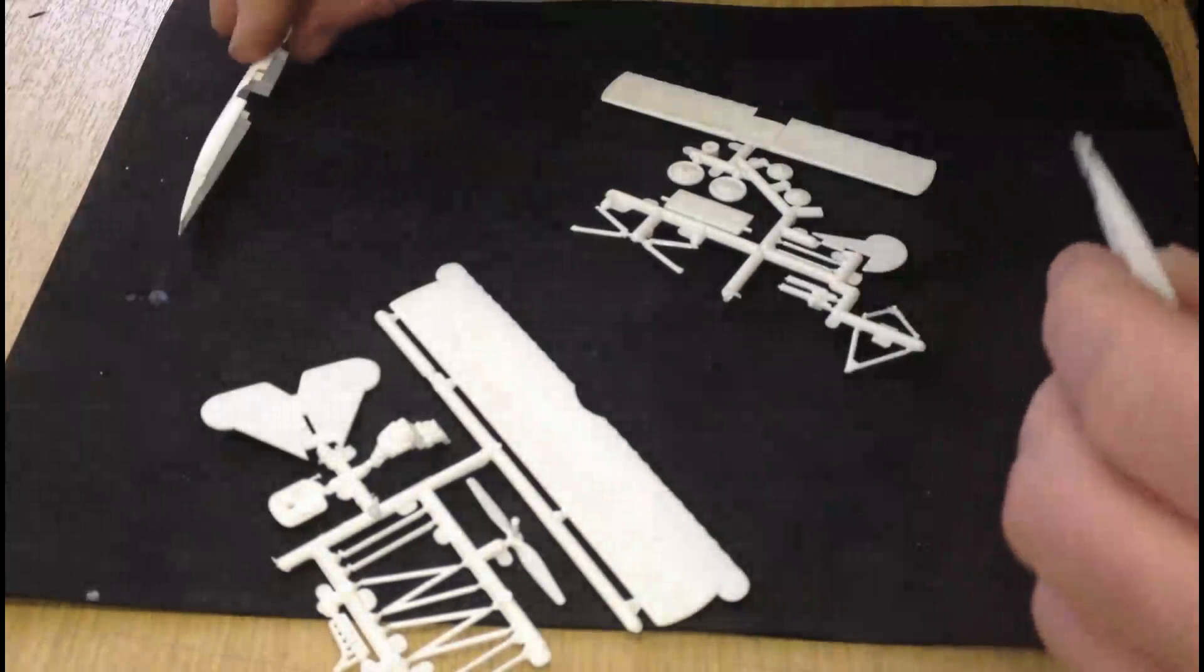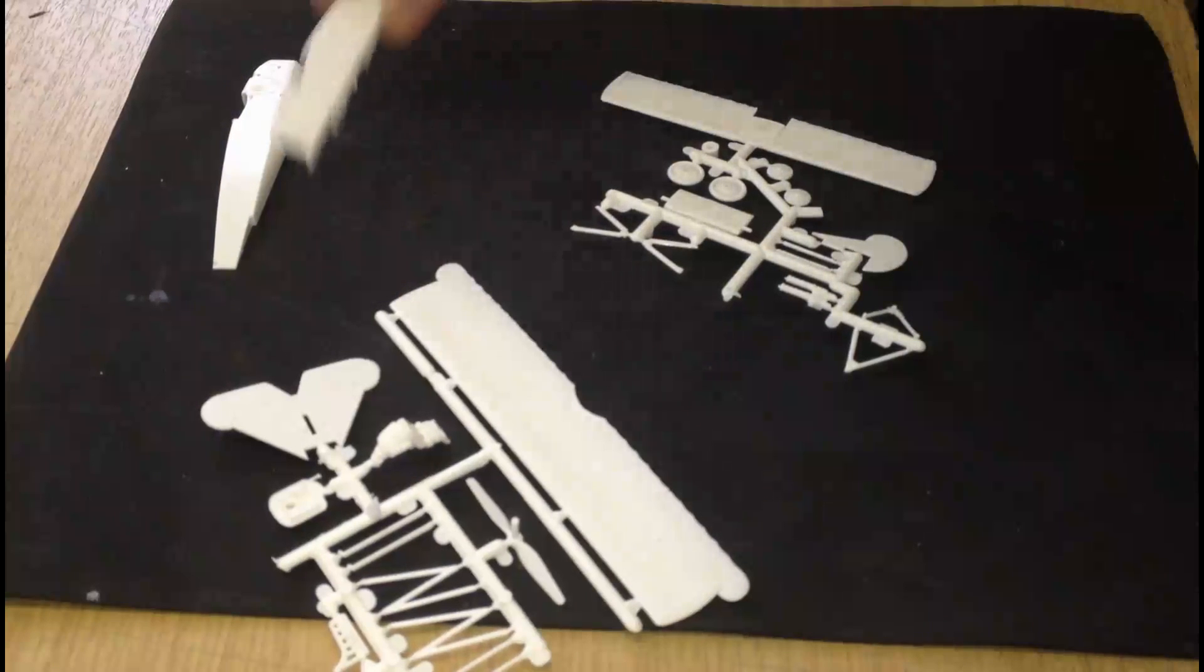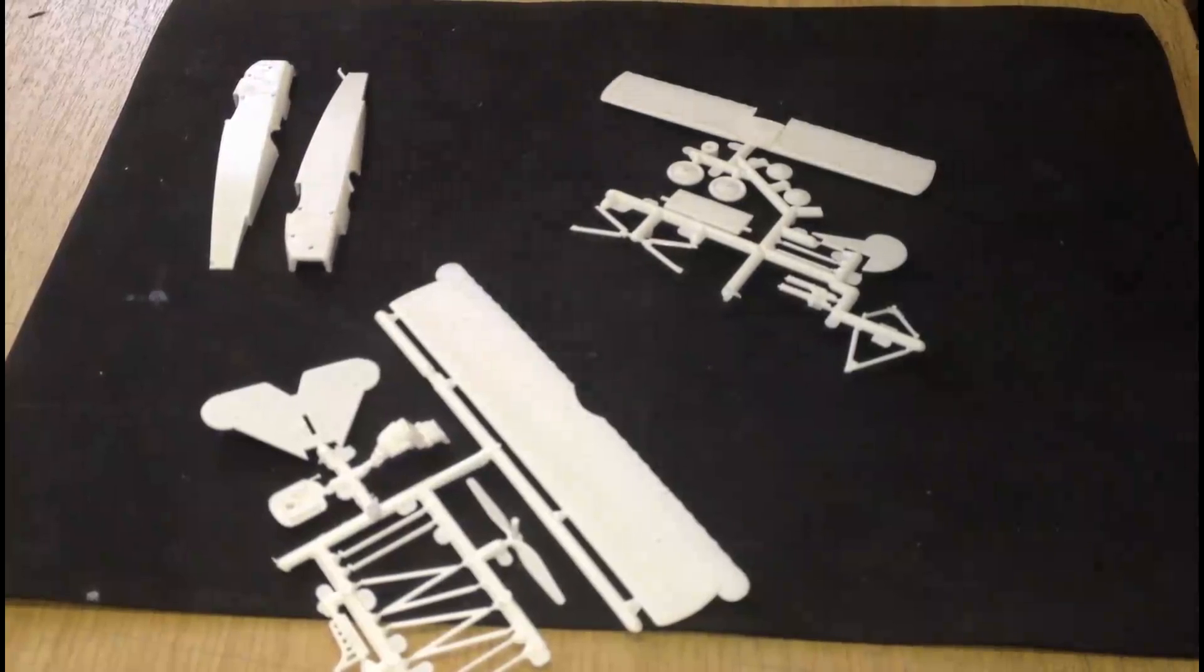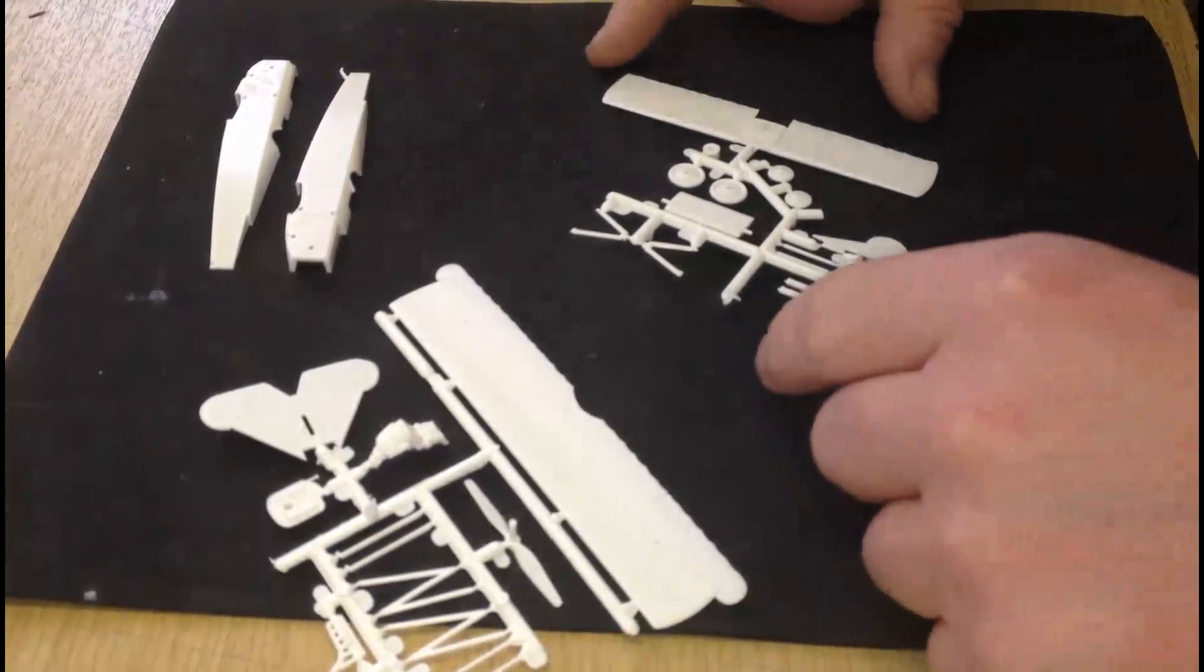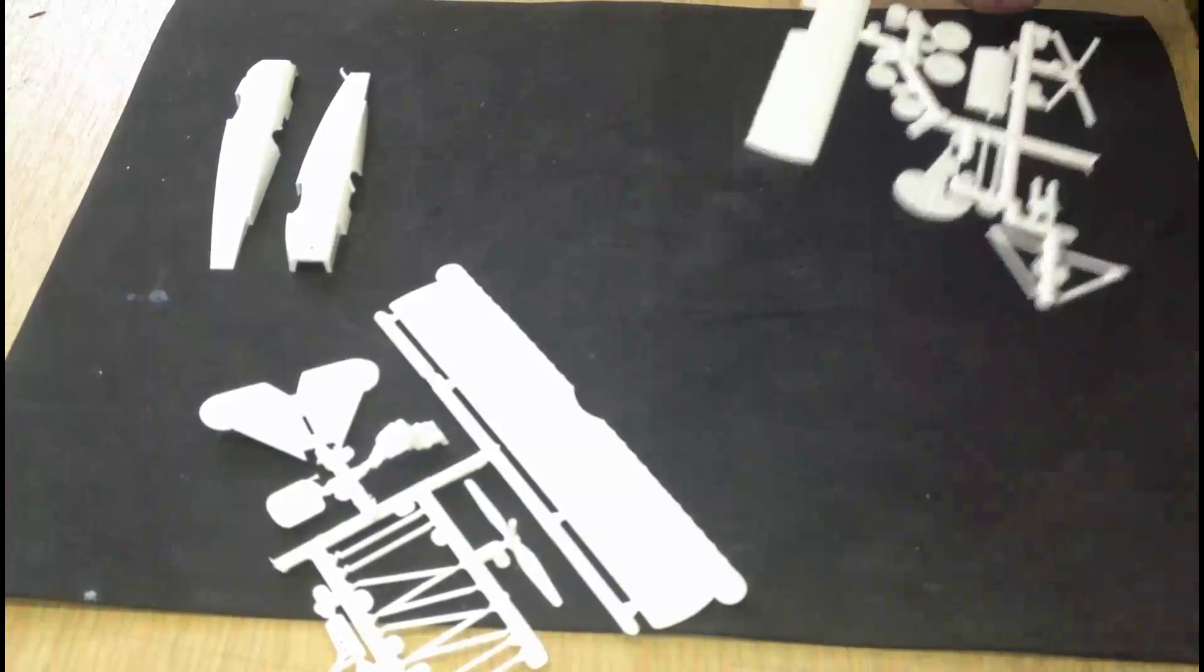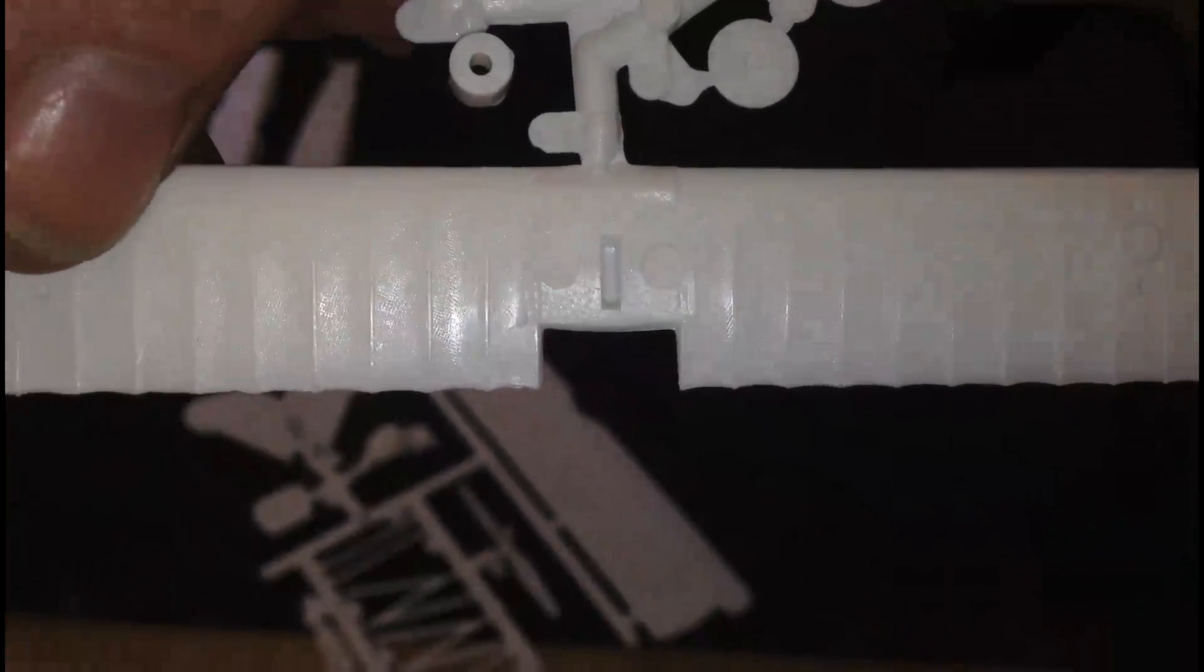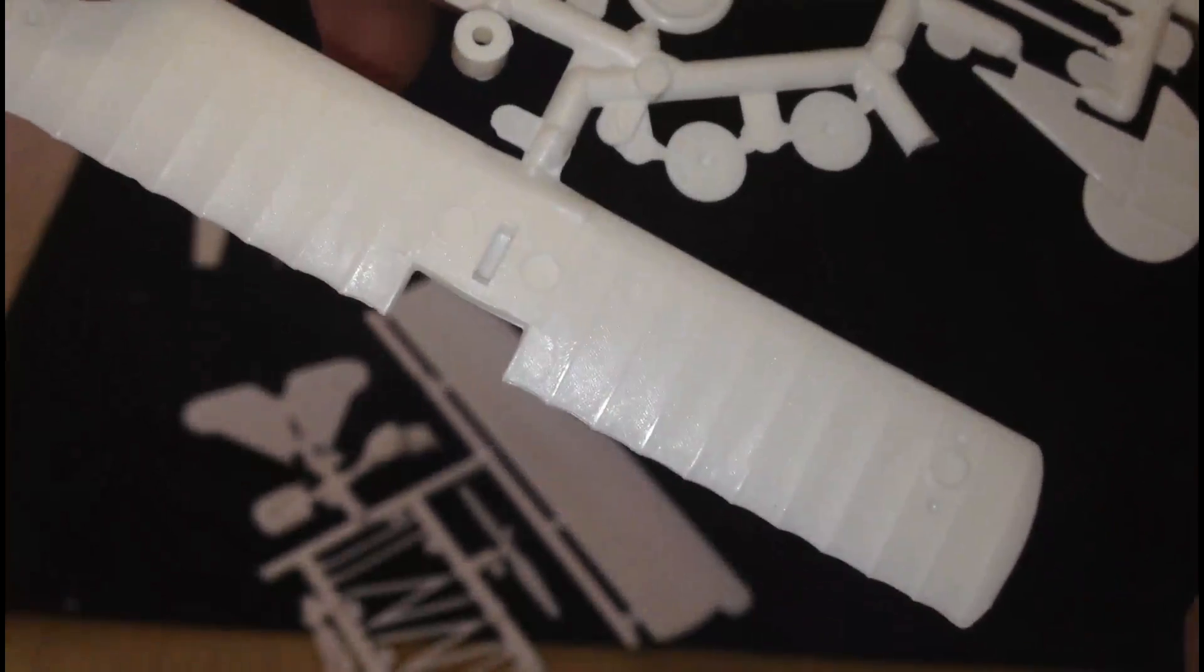On the fuselage it does have some detail in it. There's actually a stamp - Revell copyright. Looking at the instructions, it says 2009. Now I don't think somehow, with the amount of flash that's on this, I don't think that's true somehow. I think this is obviously an older kit because it's got raised panel lines on the wings.